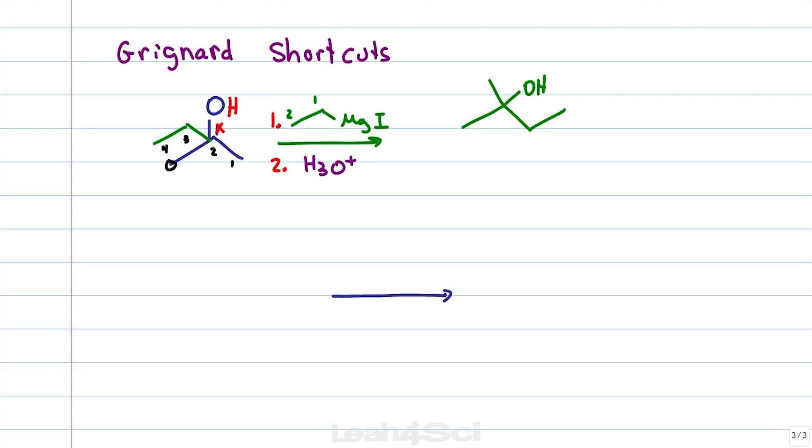Say you're given a product and told to show how you would form this from a Grignard. What you do is identify the alcohol because the alcohol is the product of a Grignard attacking a carbonyl and recognize the carbon holding the alcohol was a carbonyl. So add your carbonyl back, cross out the hydrogen and then break right next to it.